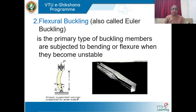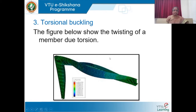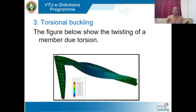Flexural buckling, also called Euler buckling, is the primary type of buckling seen in general failure — members subjected to bending become unstable when load is continually applied. When you apply load on a column, at one point it will bend. Torsional buckling occurs when the column is twisted due to torsion — that is, two equal and opposite moments applied at both ends.